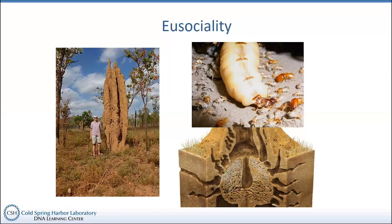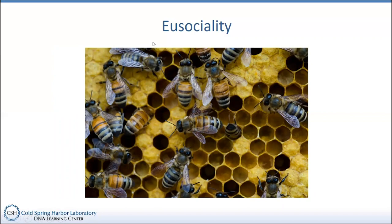Bees are, I think, the last example of this eusocial behavior. This is the regular Western honeybee that most people are familiar with, but there are many other types of eusocial bees as well. Technically, bumblebees and even yellow jackets to some extent demonstrate primitive eusociality. The honeybee is one of the most familiar, and I'm going to show you some actual bees momentarily.